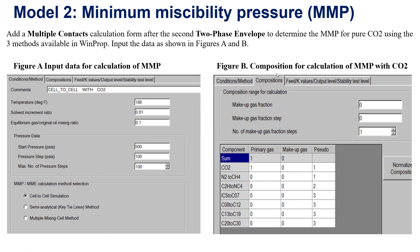When you add a multiple contact calculation after the second two-phase envelope to determine the MMP for carbon dioxide, you use three methods available in WinProp. Input data is shown in Figure A and Figure B. Figure A represents input data for the MMP value calculation, and Figure B represents the composition for MMP calculation with carbon dioxide. The three different methods are: cell-to-cell simulation, semi-analytical tie-line method, and multiple mixing cell method.